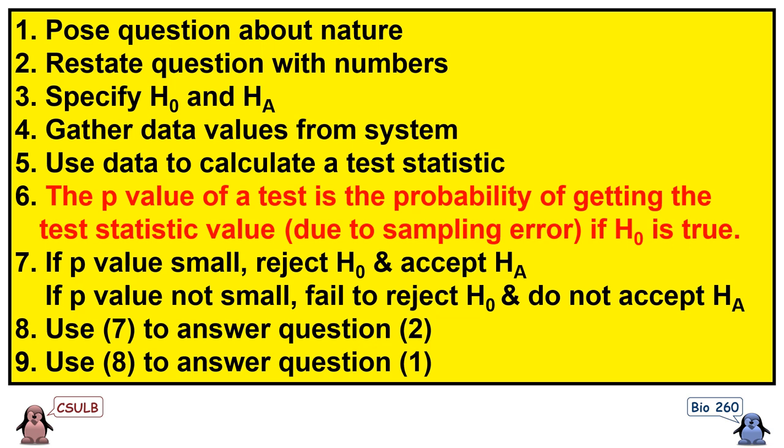First, we pose a question about nature — that question depends on what aspect of biology we're interested in. Second, we need to figure out how to use some sort of metric to restate that question with numbers, typically numbers that allow us to see if there are differences between groups or relationships between different factors. Third, we specify our null and alternative hypotheses. Fourth, we gather data values from our system using whatever techniques and methods we have to measure the metrics decided in step 2.